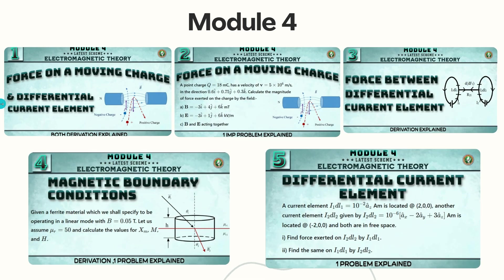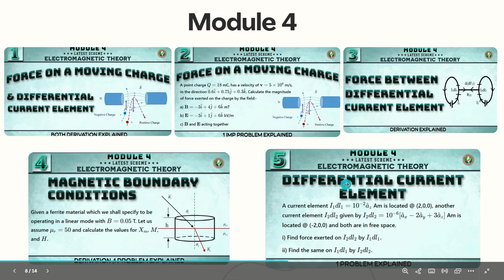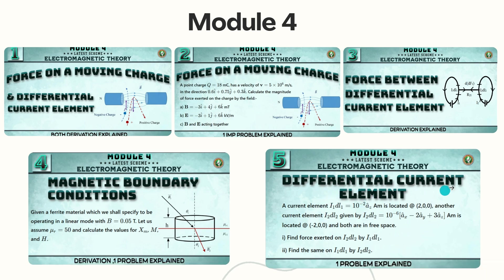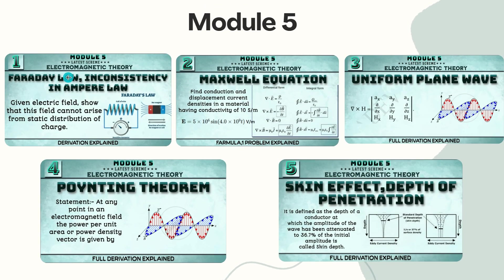Module 4 covers force on a moving charge, force between differential current elements, and magnetic boundary conditions — which is very important. We also discussed one important problem based on differential current elements. From module 5 we covered Faraday's law, Maxwell's equations in both differential and integral form, uniform plane wave propagation, Poynting's theorem, skin effect, and depth of penetration.